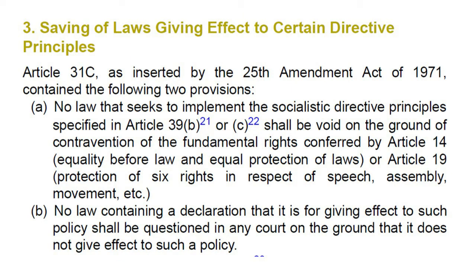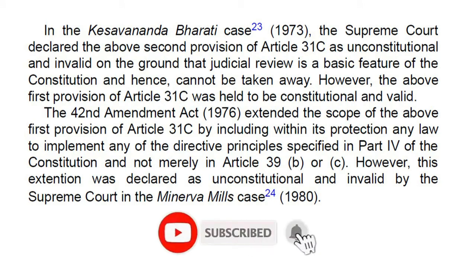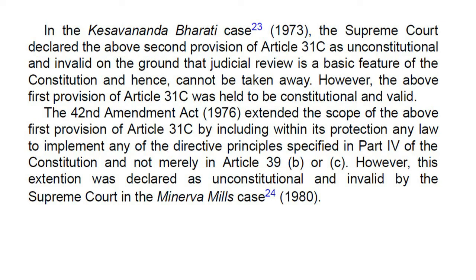Article 31c, as inserted by the 25th Amendment Act of 1971, contained two provisions: (a) No law that seeks to implement the socialistic directive principles specified in Article 39b or c shall be void on the ground of contravention of fundamental rights conferred by Articles 14 or 19. (b) No law containing a declaration that it is for giving effect to such policy shall be questioned in any court on the ground that it does not give effect to such a policy. In the Kesavananda Bharati case 1973, the Supreme Court declared the second provision unconstitutional on the ground that judicial review is a basic feature of the Constitution and cannot be taken away.